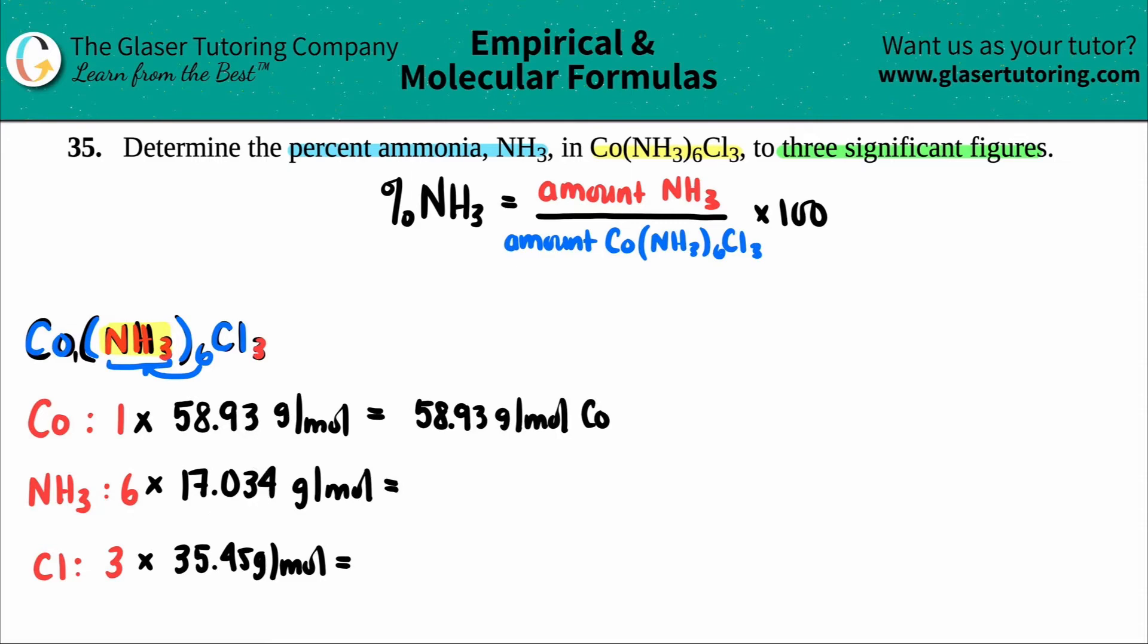6 times 17.034 is 102.204. And that's the grams per mole of the NH3. And then we have to do 3 times 35.45. So I get 106.35. And that's the grams per mole of just the chlorine. Now we still need to get the total molar mass. So remember, once you have the totals of each individual component, all you got to do is just add all of these numbers up to get the total molar mass. And that's the number that's going to go on the bottom.